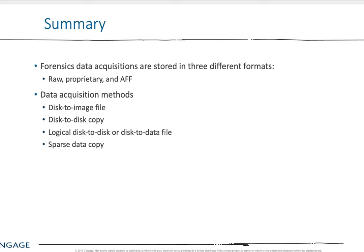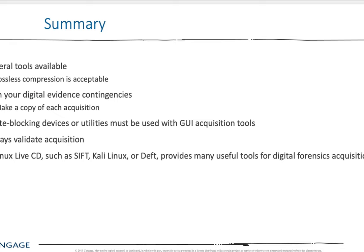Data acquisition methods: disk-to-image, disk-to-disk, logical disk-to-disk, or disk-to-data file — read through that. Sparse data copies as mentioned earlier. Several tools are available. Lossless compression is acceptable — read through what that means. Plan the digital evidence as well as the acquisition. Plan for contingencies — what will happen if things go wrong? Always have a one or two step fallback. Everything gets documented. Good documentation is what digital forensics experts and expert witnesses need to have. Write blocking — read through that — and always validate the acquisition so you can verify in court.